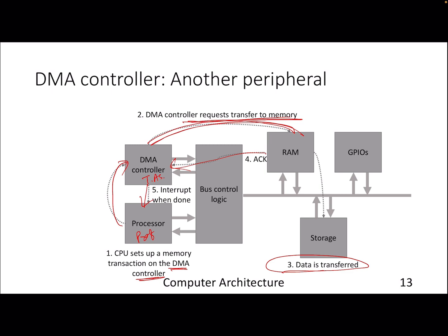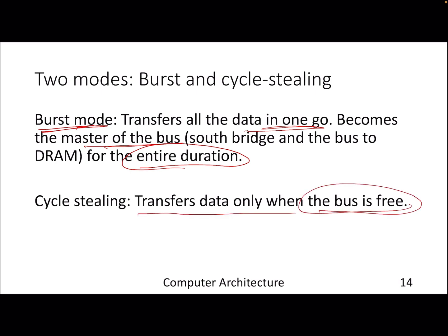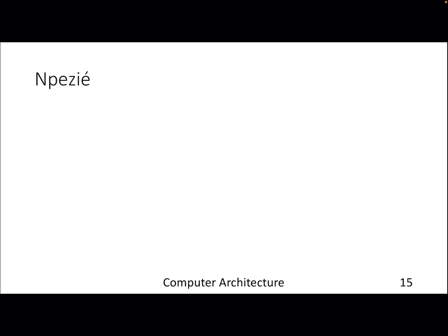In this case, the processor is not spending a lot of time handling the request. There are two modes for DMA: burst mode, where the data transfer happens in one go and the DMA controller becomes the master of the bus for the entire duration of the IO transfer; and cycle stealing mode, where data is transferred only when the bus is free — the bus here being the memory bus and the southbridge bus.